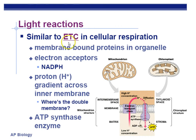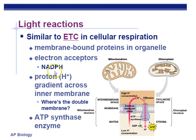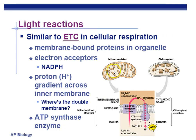Light reactions are similar to the electron transport chain in cell respiration. Both have membrane-bound carrier proteins and electron acceptors. In plants we have NADPH; NADH is the one found in cell respiration from glycolysis and the Krebs cycle. Think of the P for photosynthesis or plant. Protons are moved across a membrane — in mitochondria they're pumped into the inner membrane space, and in plants into the thylakoid. Both have ATP synthase making ATP, and both involve chemiosmosis.